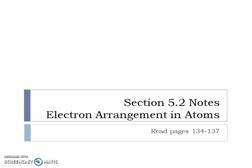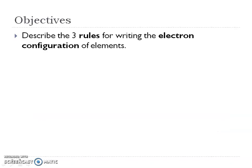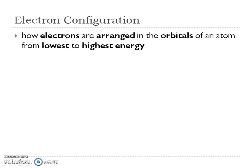This is Mrs. O'Neill for Chapter 5, Section 2: Electron Arrangement in Atoms. In this section, we're going to describe the three rules for writing electron configuration of these elements.